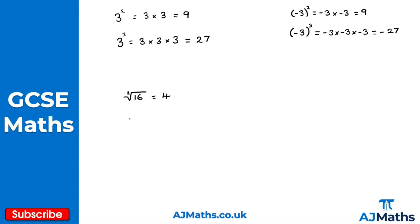For another example, the square root of 25: what number times by itself gives 25? That number must be 5. We should also note that every positive number has two square roots — one positive solution and one negative root as well.